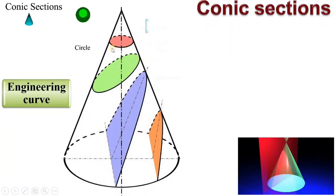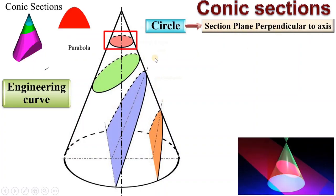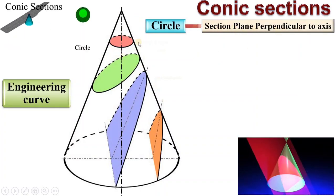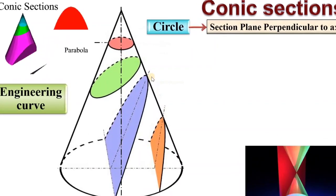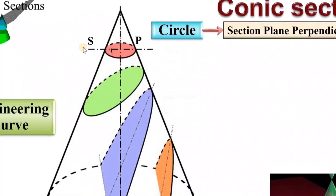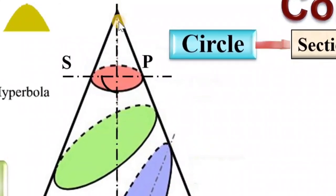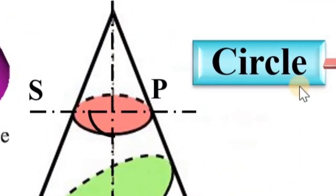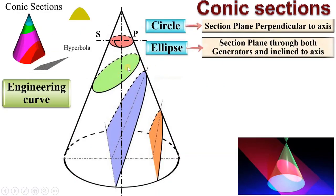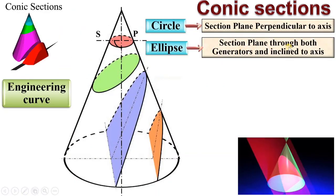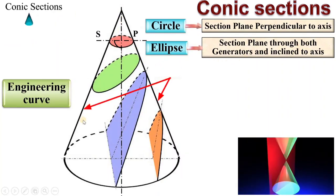Now if you want to get a circle, then your section plane must be perpendicular to the axis of the cone. Here you can see this section plane is perpendicular to the axis of the cone, and then you will get the circle. Next, for the ellipse, the section plane passes through both the generators.